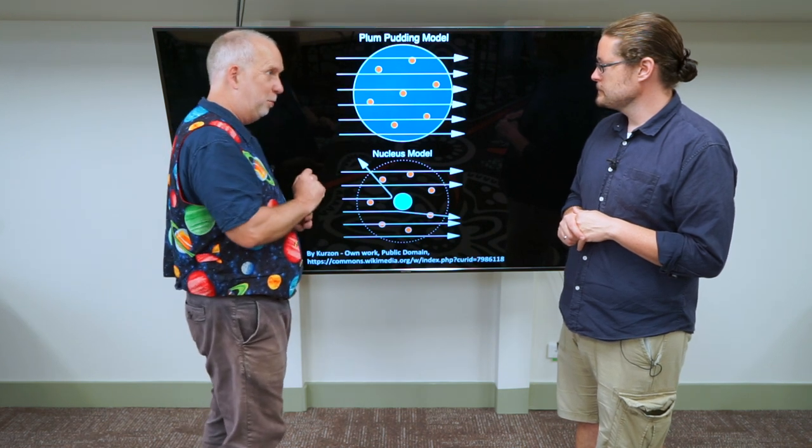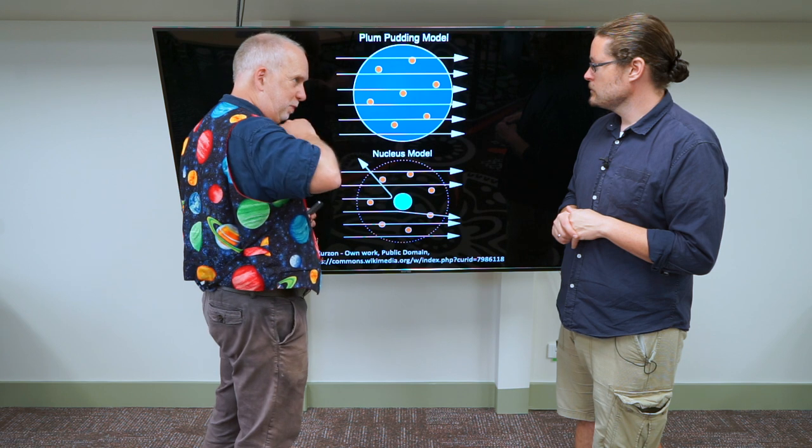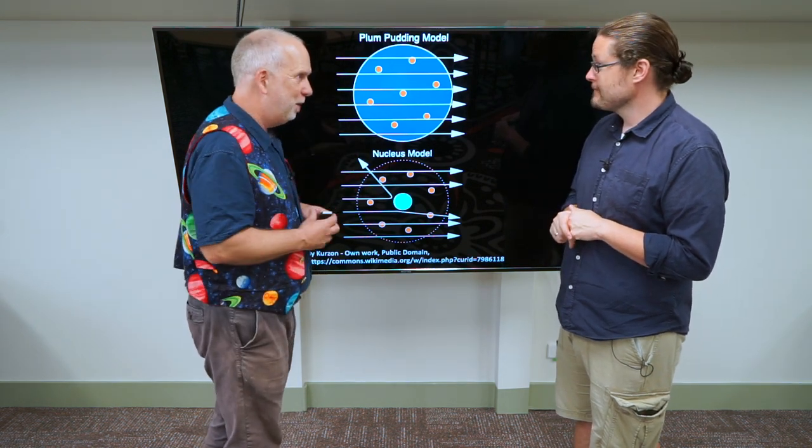The electrons wouldn't have enough mass to stop them, and the positive charge was too spread out, so it should just be able to go like a hot knife through butter, or a bullet through tissue paper, or something like this.